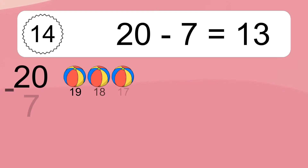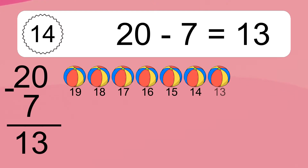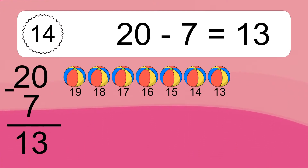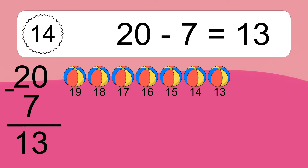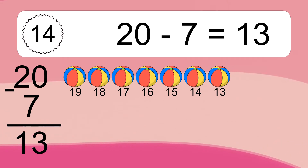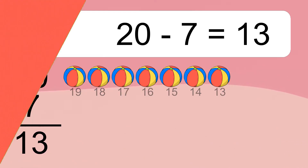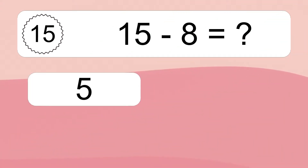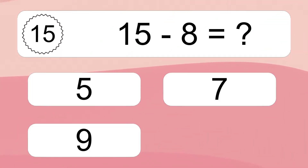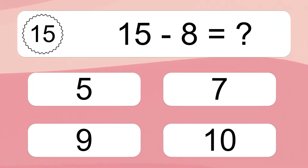20 minus 7 equals what? 20 minus 7 equals 13. Let's count it. 19, 18, 17, 16, 15, 14, 13.